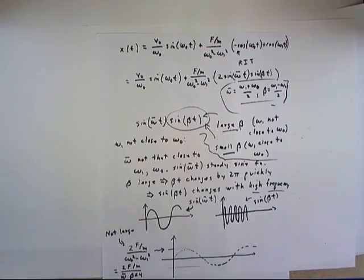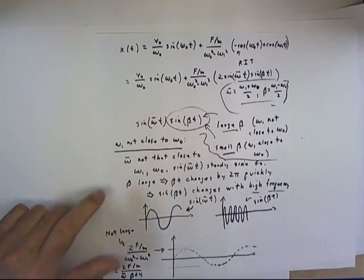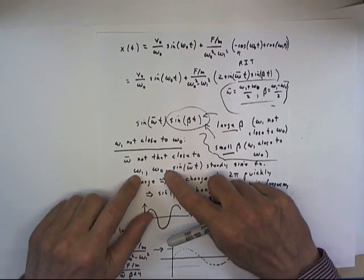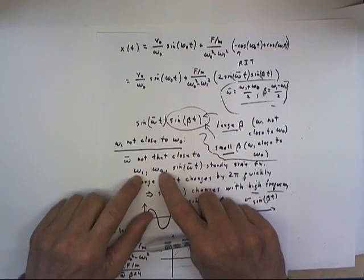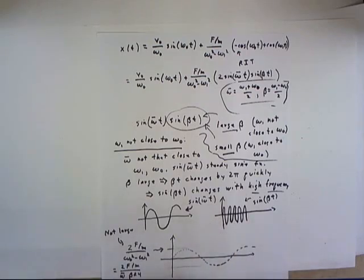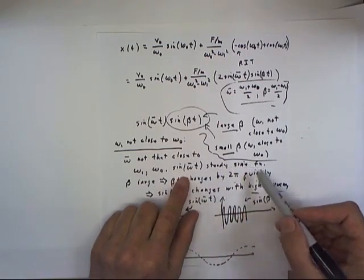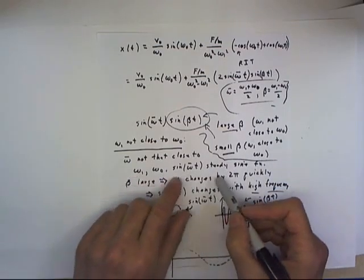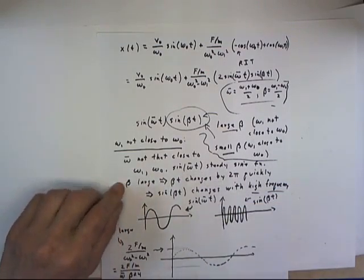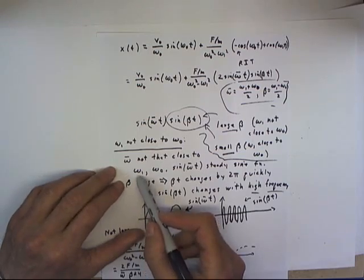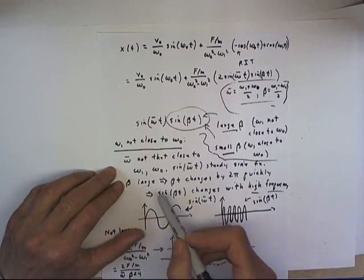To be more specific, let's take the case where omega-1 is not close to omega-naught. In that case, omega-bar is not that close to omega-1 or omega-naught, being halfway between them — if they aren't close together, the halfway point isn't all that close to either one. The sine of omega-bar t is just going to be a steady sine function with an angular frequency not all that close to omega-naught. And since omega-1 and omega-naught are not close together, beta is going to be fairly large.